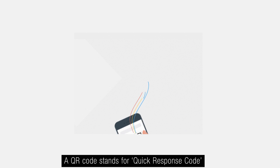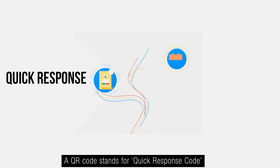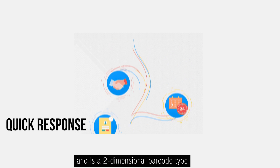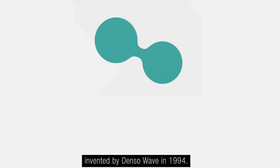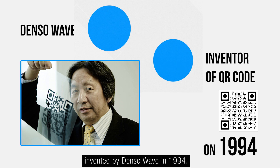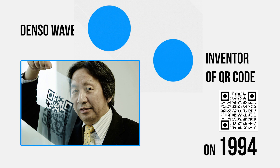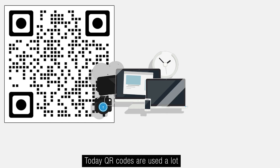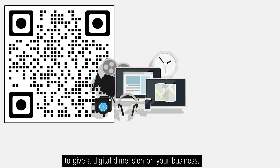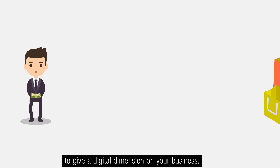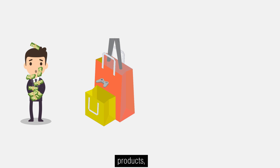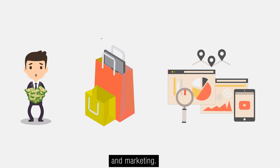A QR code stands for Quick Response code and is a two-dimensional barcode type invented by Denso Wave in 1994. Today, QR codes are used a lot to give a digital dimension to your business, products, and marketing.